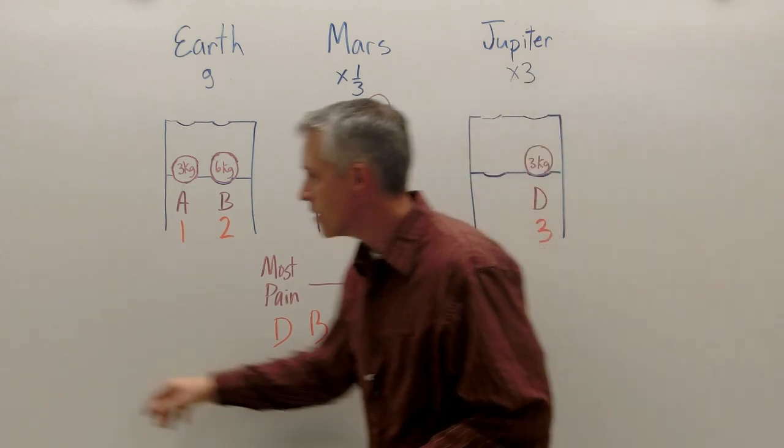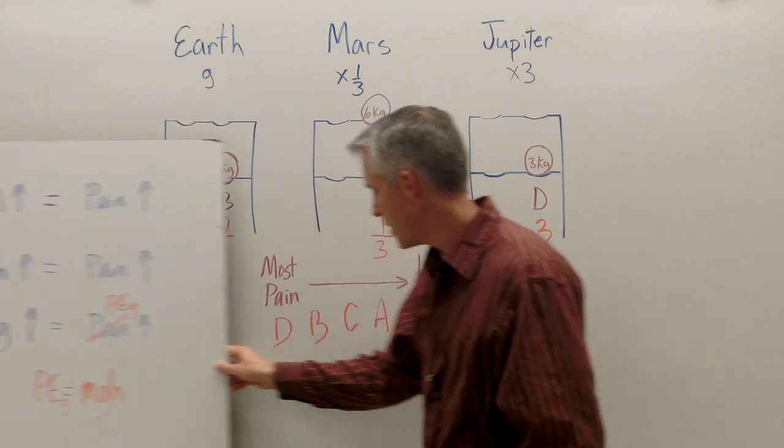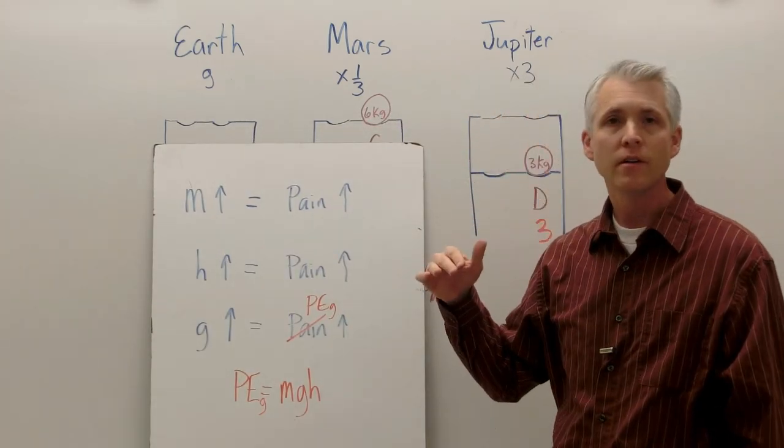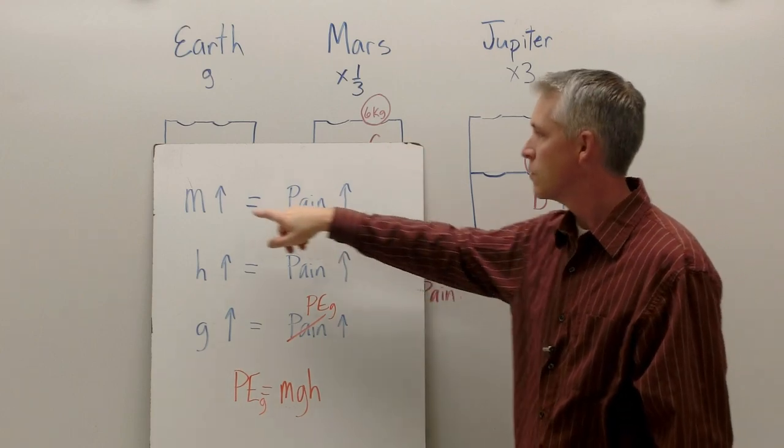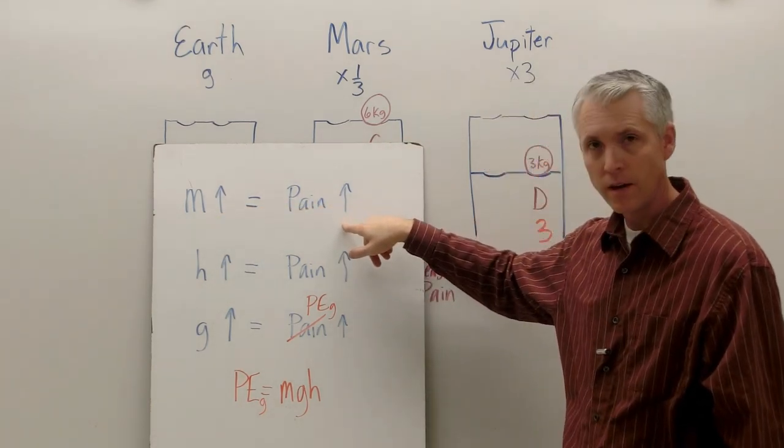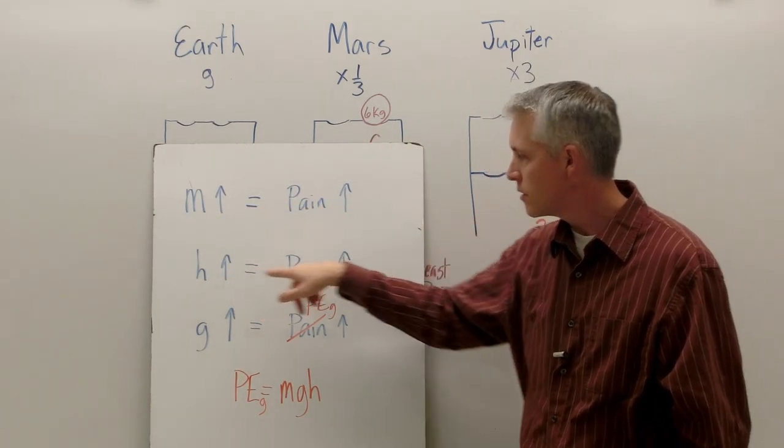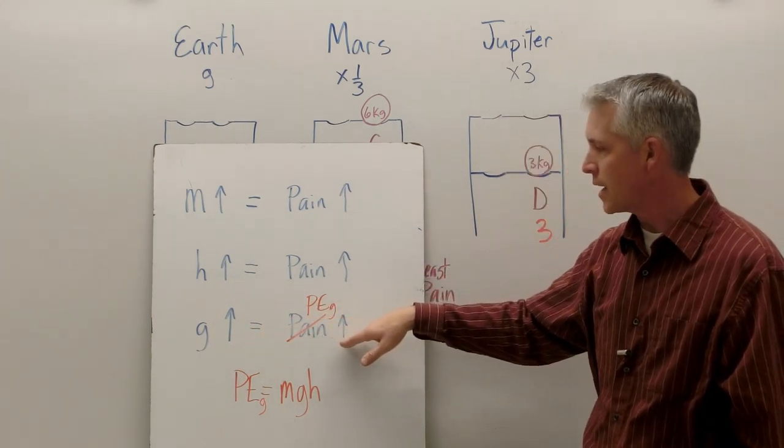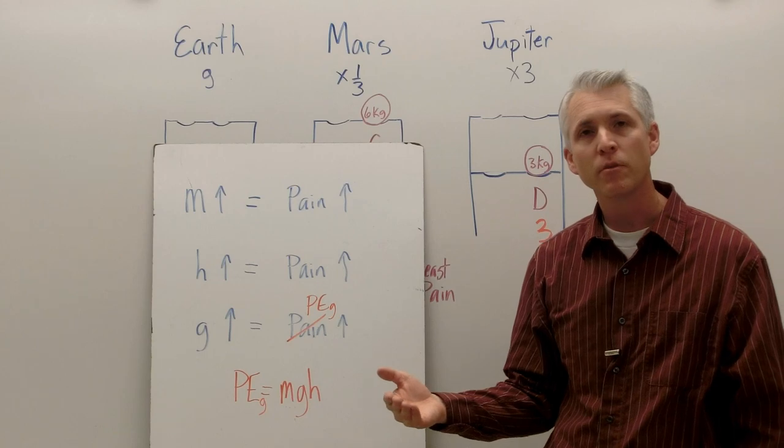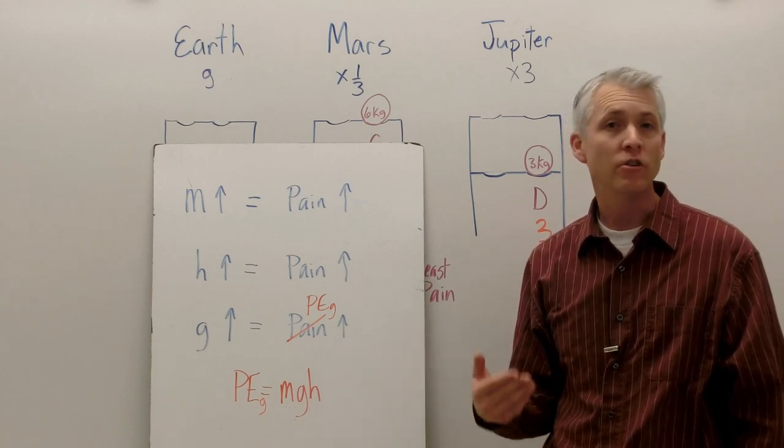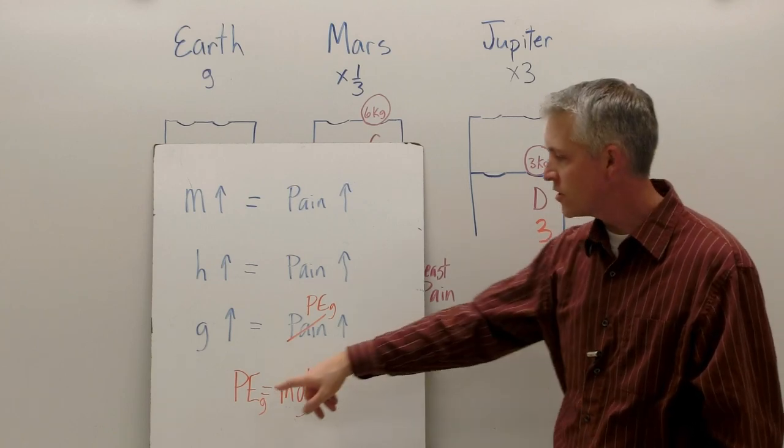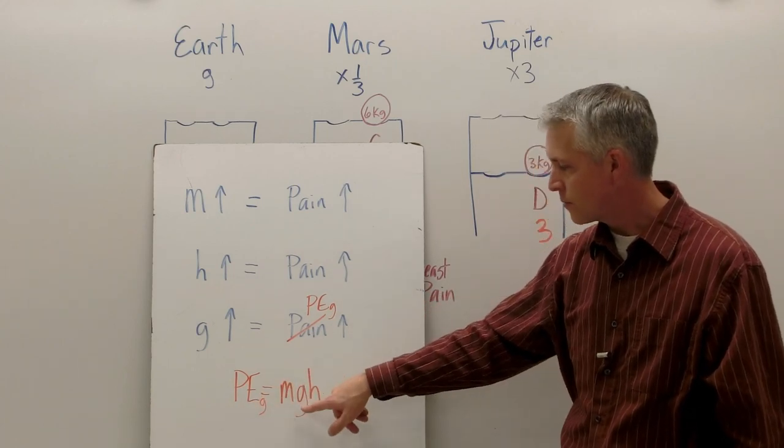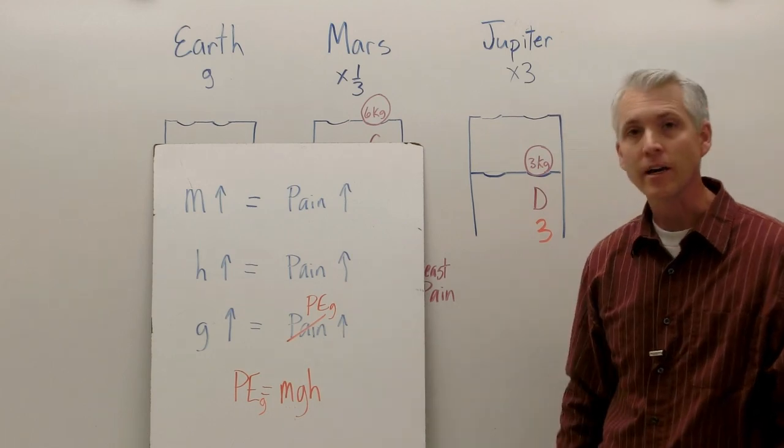So we can see here that these three things seem to affect the pain when something is up on a shelf. When there's more mass, we'll get more pain. When it's higher up, we'll get more pain. When gravity is stronger, we'll also get more pain. And this idea of pain, remember, is representing potential energy due to gravity. And so potential energy due to gravity must be those three things put together: mass times gravity strength times the height.